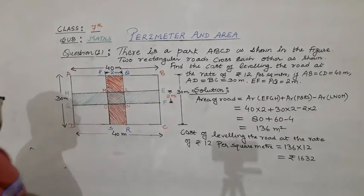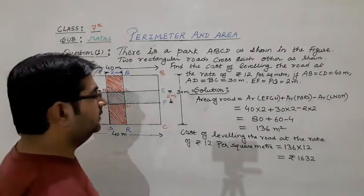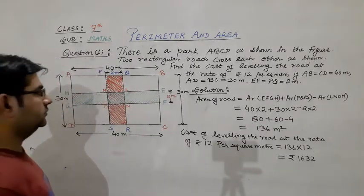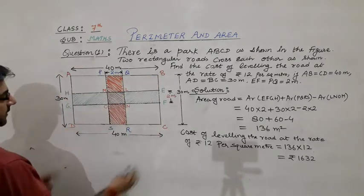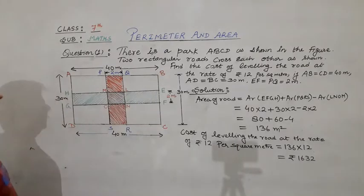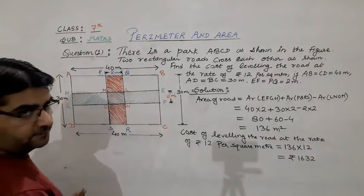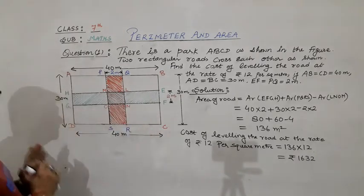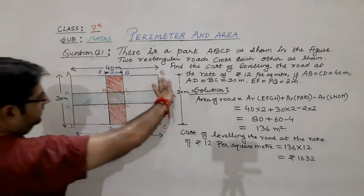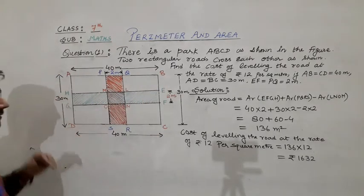We are given all the dimensions, that is the length and breadth of the roads also. AB is equal to CD, 40 meters, both are 40 meters because ABCD is a rectangular shape and we know that in a rectangle opposite sides are equal. Similarly, AD is also equal to BC, both are 30 meters.